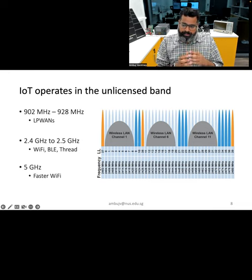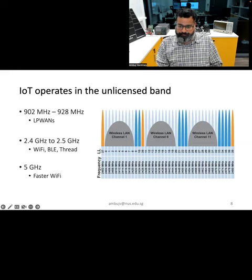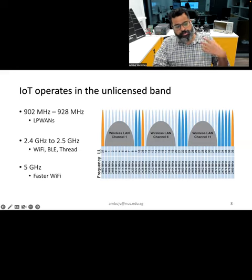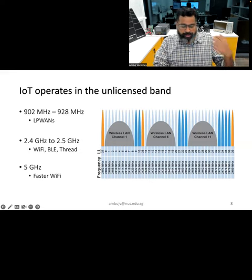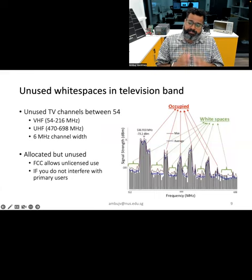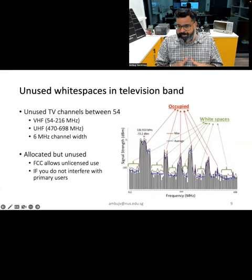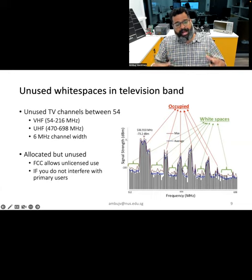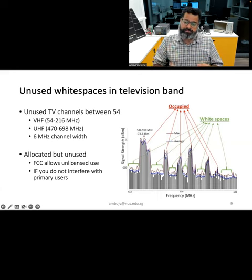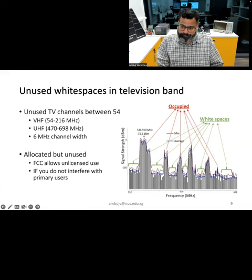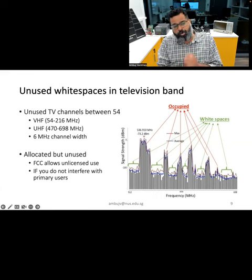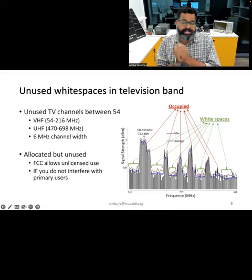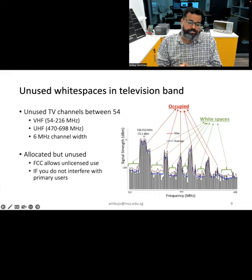The 2.4 GHz frequency band is commonly used for IoT communication, especially by standards such as Bluetooth and Wi-Fi. These days, 5 GHz is also used for Wi-Fi, and this is also part of the unlicensed band. In addition to unlicensed bands, an emerging area is the television spectrum. Many portions of the television spectrum are highly suitable for IoT devices because they are much lower in frequency, offering much better propagation characteristics and enabling transmission over much longer distances. Parts of the television spectrum that are unoccupied — known as white space — can be used by IoT devices and are already being used in some IoT deployments.